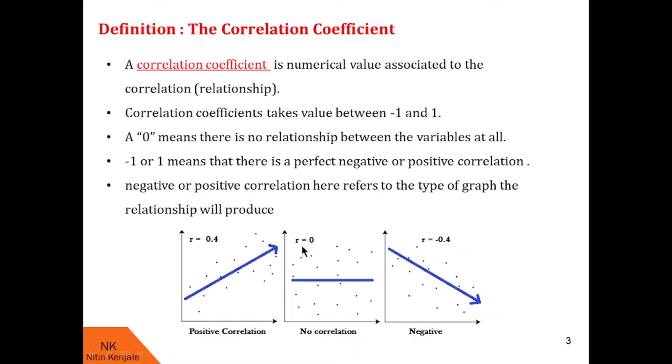When R is equal to 0, we see that there is no correlation at all among the data values. When R is equal to 0.4, you can clearly see that slope of this blue line is positive. That means this data is positively correlated. And when R is negative, say minus 0.4, slope of this blue line is negative. That means these data are negatively correlated.